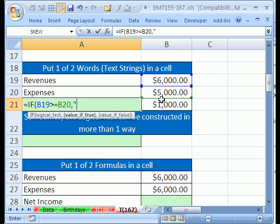Net income. End quote. Comma. Otherwise, the value of false is, and we have to put text in quotes. Net loss.